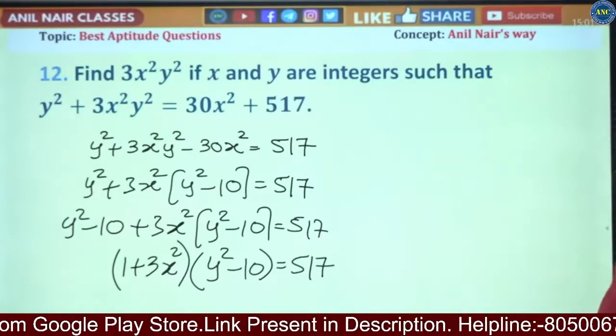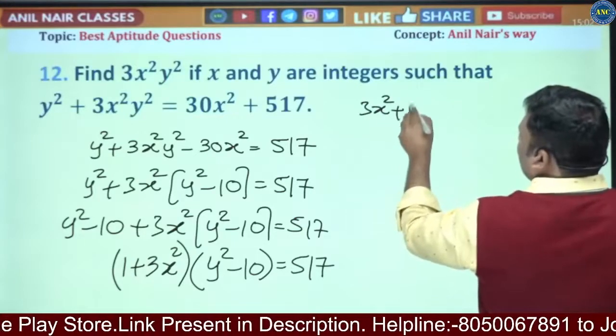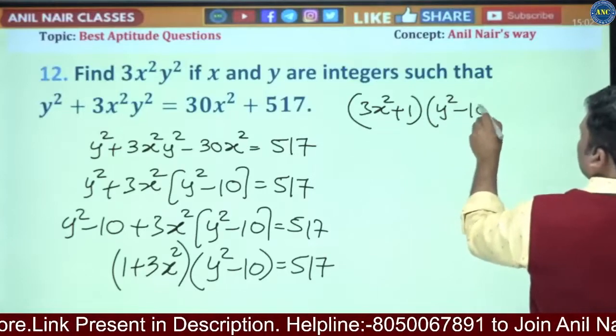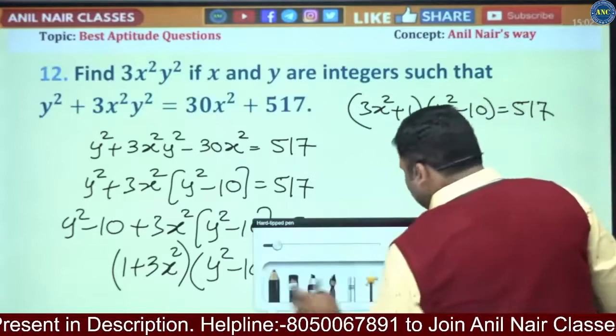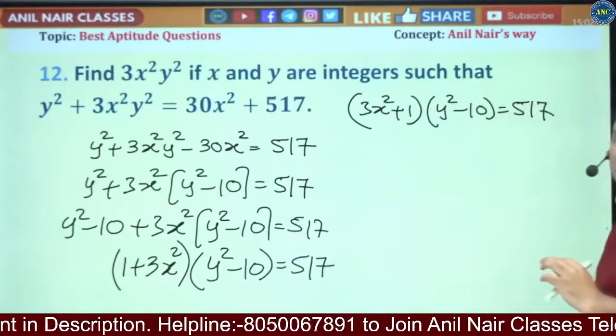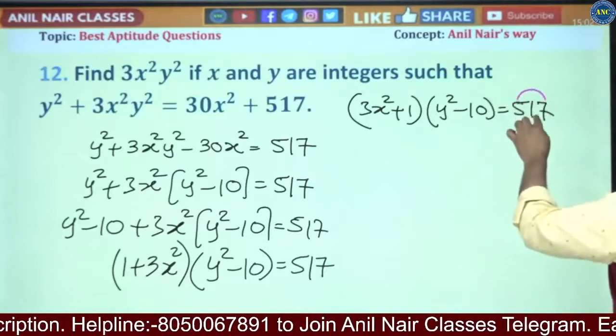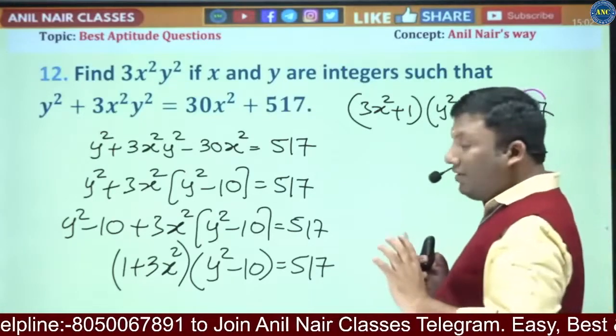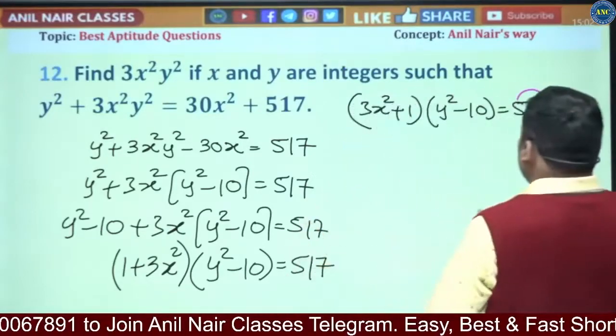So that means 3x² + 1 into y² - 10 is equivalent to 517. Before checking whether 517 is prime or composite, it should immediately strike you. Sum of odd places is 12, sum of even places is 1. 12 - 1 is 11. That means the right hand side is divisible by 11, so it is a composite number.